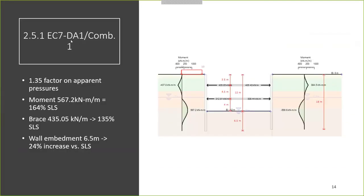When we look at the excavation with EC7 DA1 Combination 1, there's a 1.35 factor on pressure. The moments of the wall increase to about 164% of the serviceability limit state, while the brace reactions go up by about 35%. At the same time, the wall embedment increases to 6.5 meters total, which is a 24% increase versus the SLS case — our traditional way of designing.